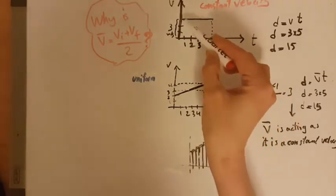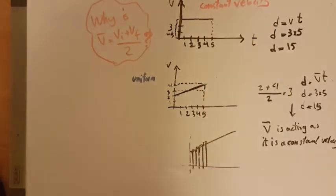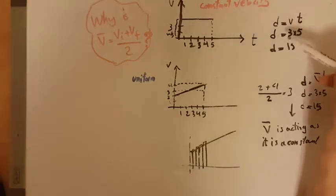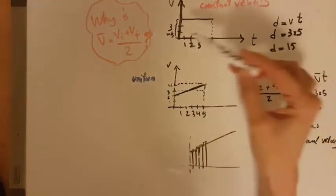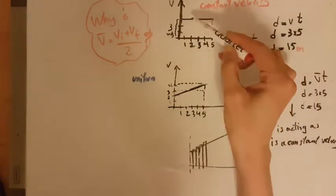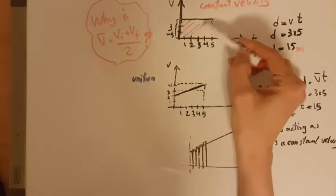So for 5 seconds, something is moving with the velocity of 3. Of course, the displacement is velocity times time, as you know. And 3 times 5 would be 15 meters, right? And you can always look at this as...